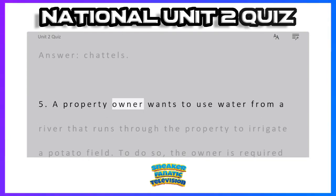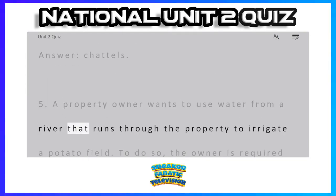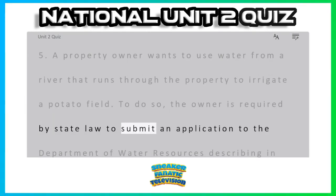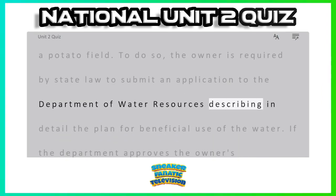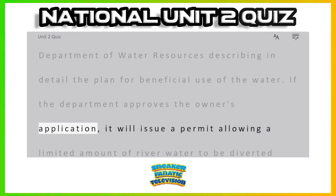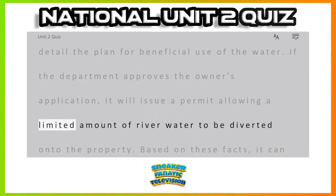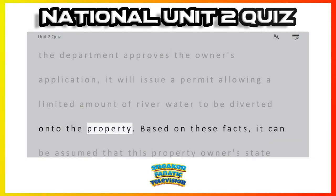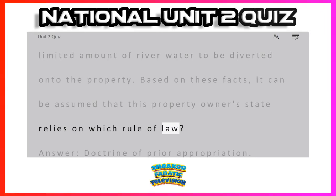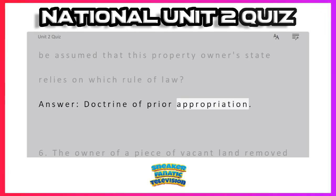Question 5: A property owner wants to use water from a river that runs through the property to irrigate a potato field. To do so, the owner is required by state law to submit an application to the Department of Water Resources describing in detail the plan for beneficial use of the water. If the department approves the owner's application, it will issue a permit allowing a limited amount of river water to be diverted onto the property. Based on these facts, it can be assumed that this property owner's state relies on which rule of law? Answer: doctrine of prior appropriation.